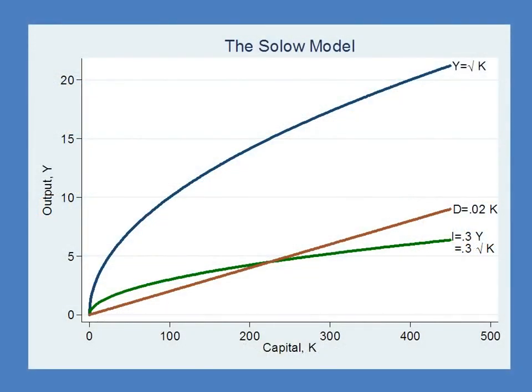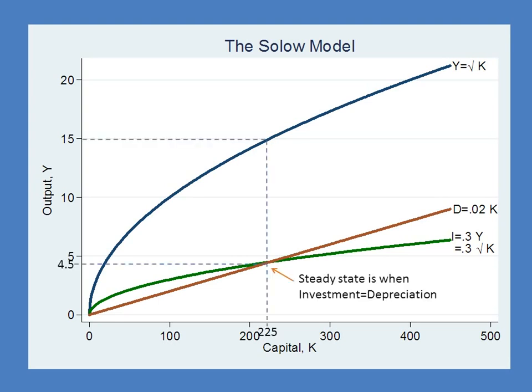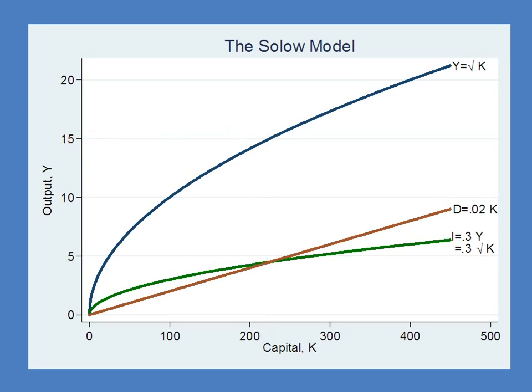Let's briefly review the SOLO model. Remember that the key to the model is the steady state, which is when investment is equal to depreciation. When investment is equal to depreciation, the economy is neither growing nor shrinking, and we can read off this graph what GDP per capita is.